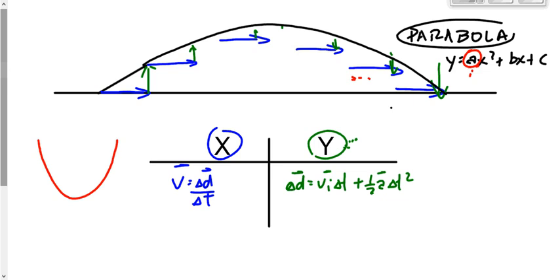Then just sub in numbers. Whatever numbers you have in the question, sub them in and solve for something. You're not necessarily going to consciously try to solve for any specific thing — just sub in numbers and whatever you get out of it, you get. If it's what you're looking for, great. If not, you now have something you didn't have before, which will help you get what you're actually looking for. It's kind of a brute-force approach.